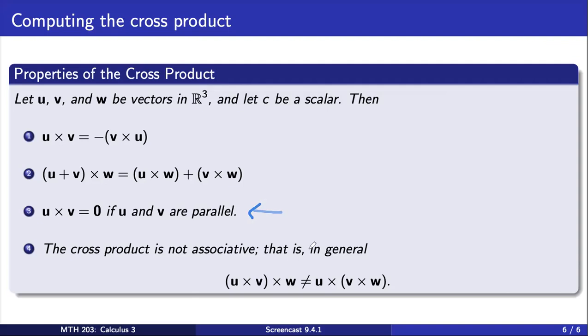Next, we see that the cross product of two vectors that are parallel is equal to the zero vector. This is the vector with all zeros as components, which has no magnitude nor direction.